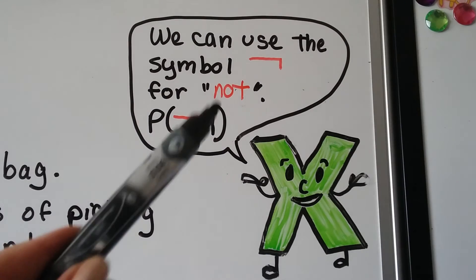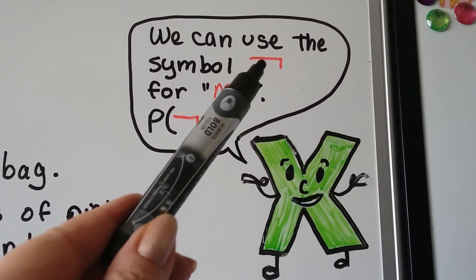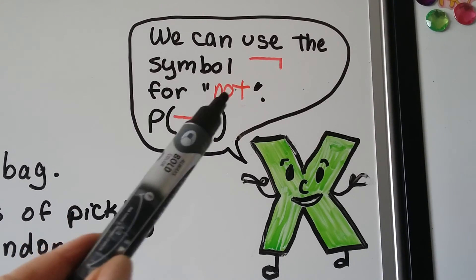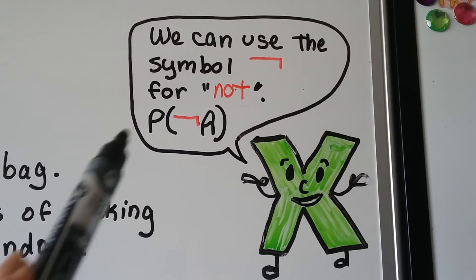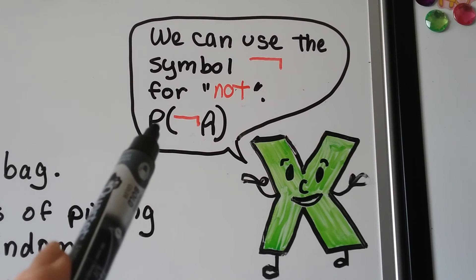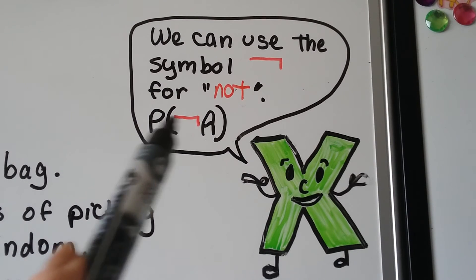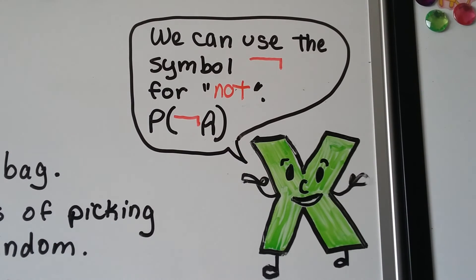We can use a sideways-looking L symbol to denote 'not.' So we could write the probability of not event A using that symbol as a quick shorthand.